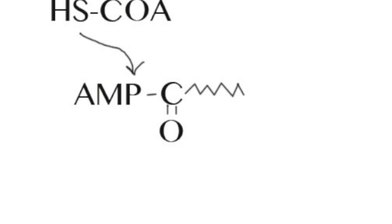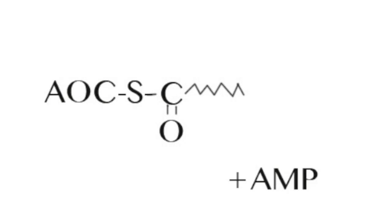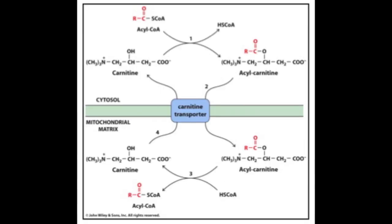In the second step of fatty acid activation, coenzyme A bonds with acyl adenylate releasing the AMP to create acyl-CoA. Acyl-CoA is an activated fatty acid.